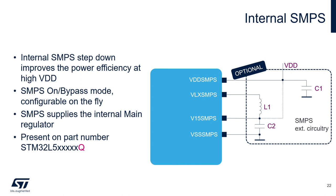STM32 L5 integrates an internal SMPS, which is an optional feature available on specific part numbers. From a board layout point of view, it requires only a few passive components — one inductor and two capacitors. SMPS greatly improves power efficiency, especially at high VDD voltage. The SMPS is configurable at runtime, so when the MCU enters one of the deeper low power modes — specifically stop 1 or deeper — the SMPS is automatically switched off and re-enabled once the MCU wakes up. The SMPS supplies the internal LDO, which in turn supplies the whole digital domain: the CPU, digital peripherals, and memories.